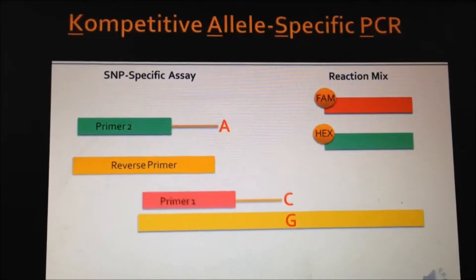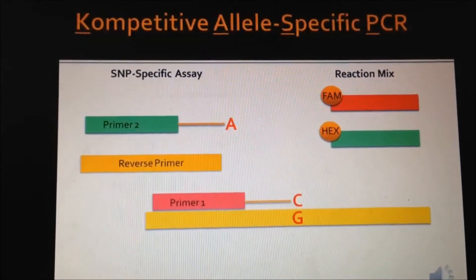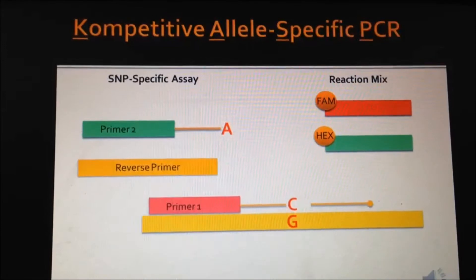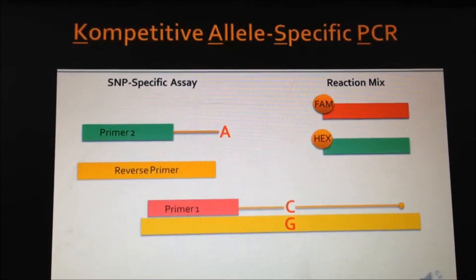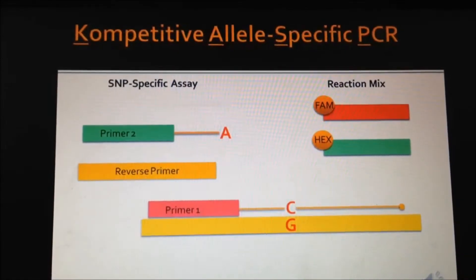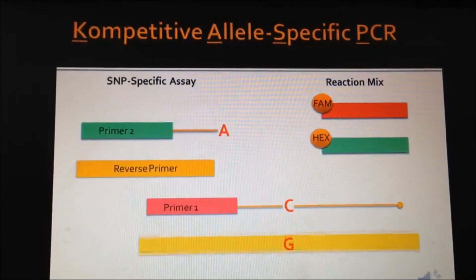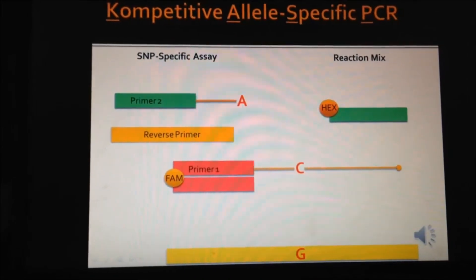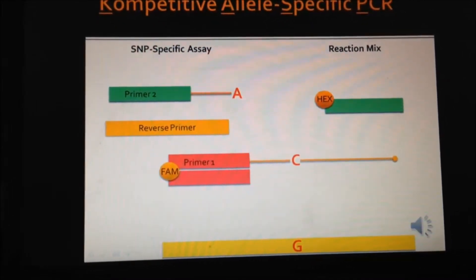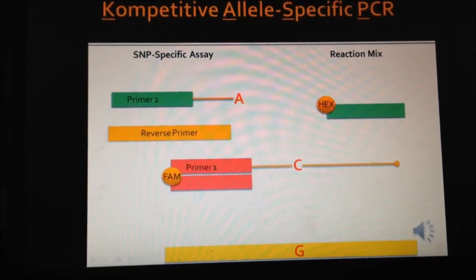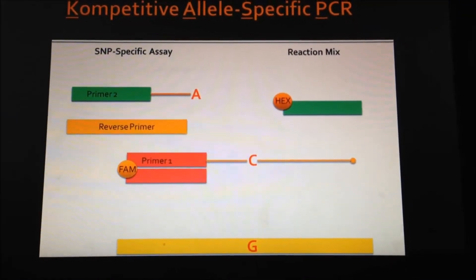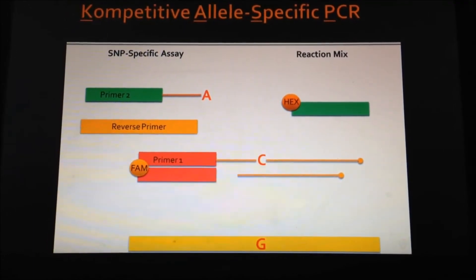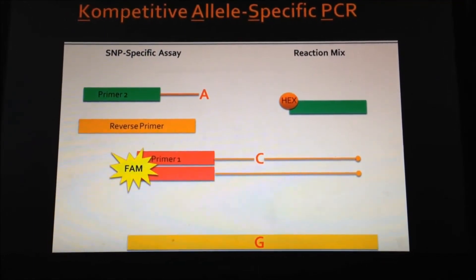During the first round of PCR, the allele-specific primers bind to the appropriate region of the template DNA containing their SNP. Once the common reverse primer has bound, elongation proceeds and the first round of PCR produces a product with the allele-specific primer incorporated into the template. Once the template is again denatured, the appropriate fluorolabeled oligo is then able to bind to first-round products containing their complementary amplified SNP allele. Incorporation of the fluorolabeled oligo into the template separates it from its 3' quencher and a fluorescent signal is produced.